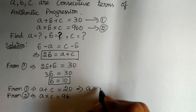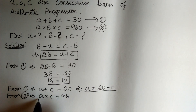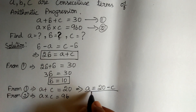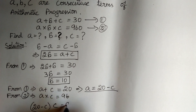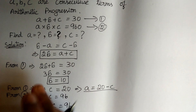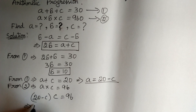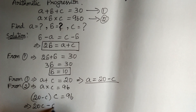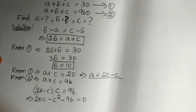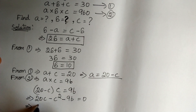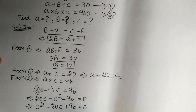From these values, we can get A is equal to 20 minus C. Substituting this into the product equation, we get 20 minus C into C is equal to 96. Simplifying, 20C minus C squared minus 96 equals 0, which we can write as C squared minus 20C plus 96 is equal to 0.